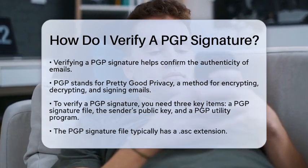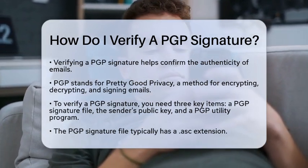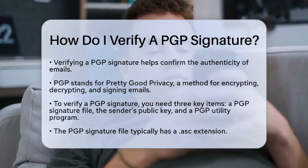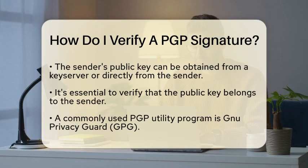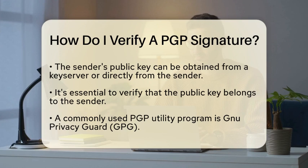To verify a PGP signature, you will need three essential items. You will need the PGP signature file, which usually has a file extension of .asc. Next, you will need the sender's public key. You can get this key from a key server or directly from the sender. It is very important to verify that this public key truly belongs to the sender.